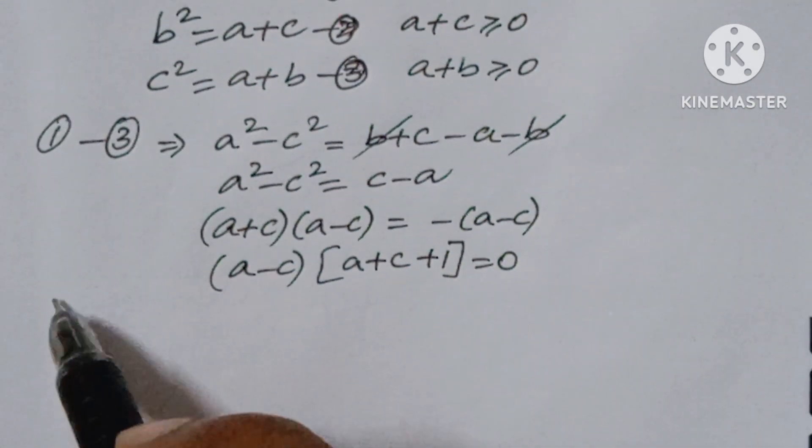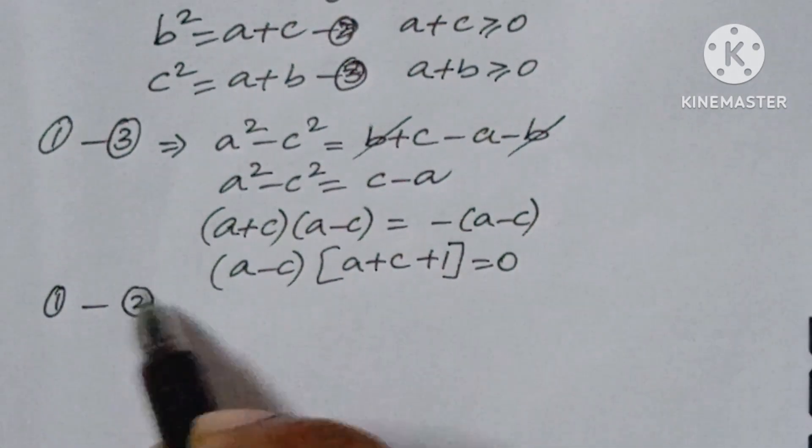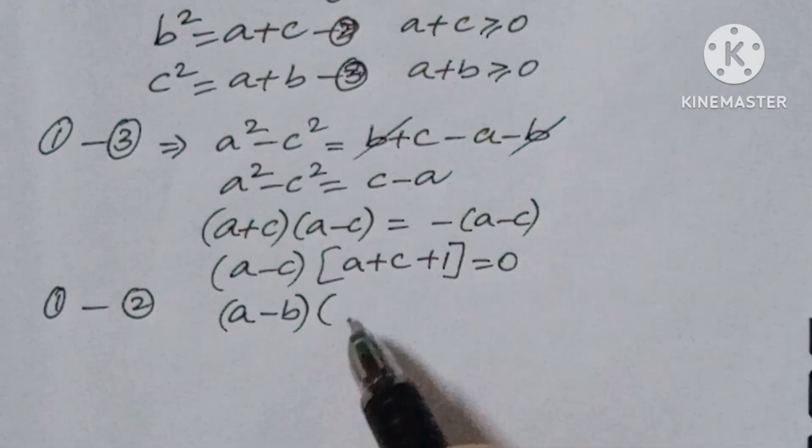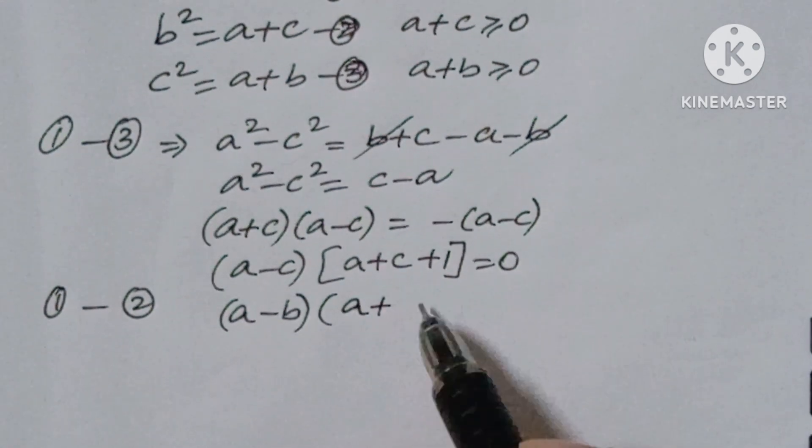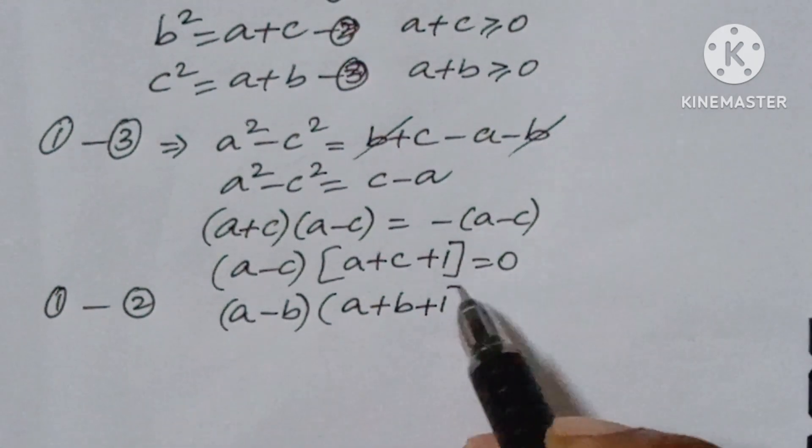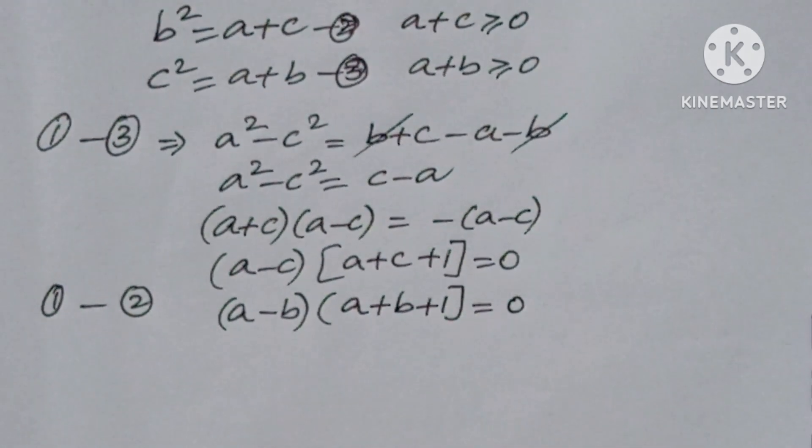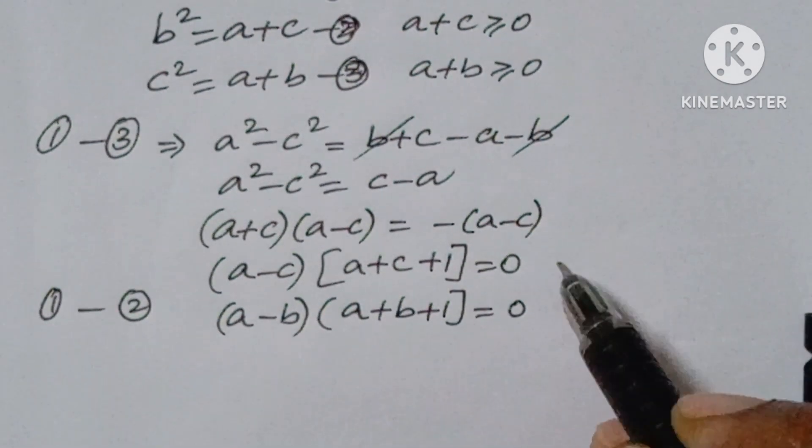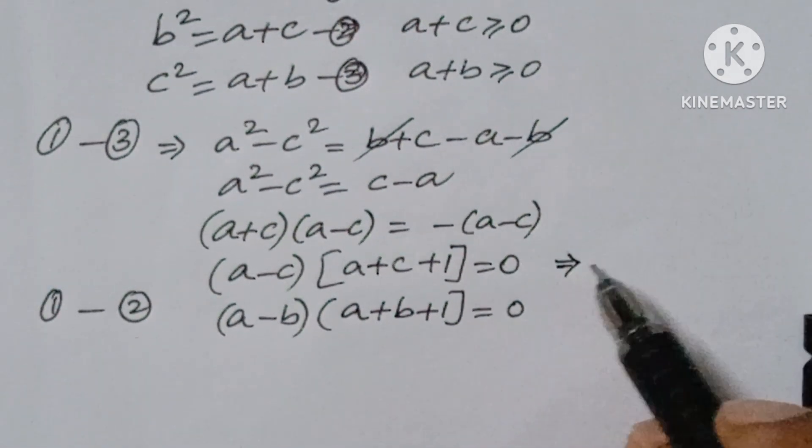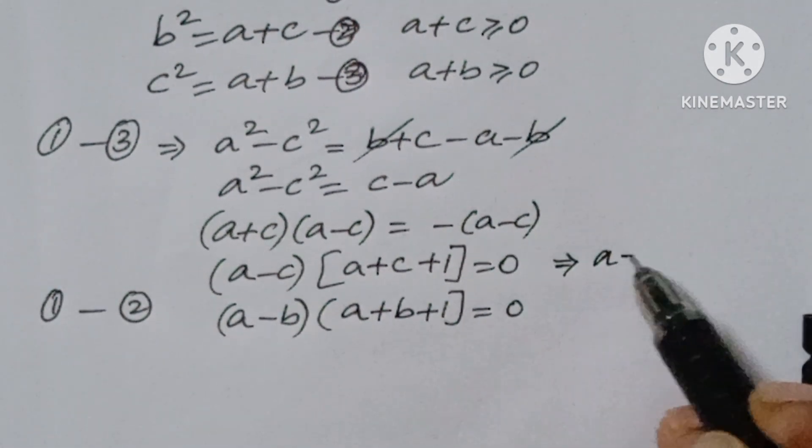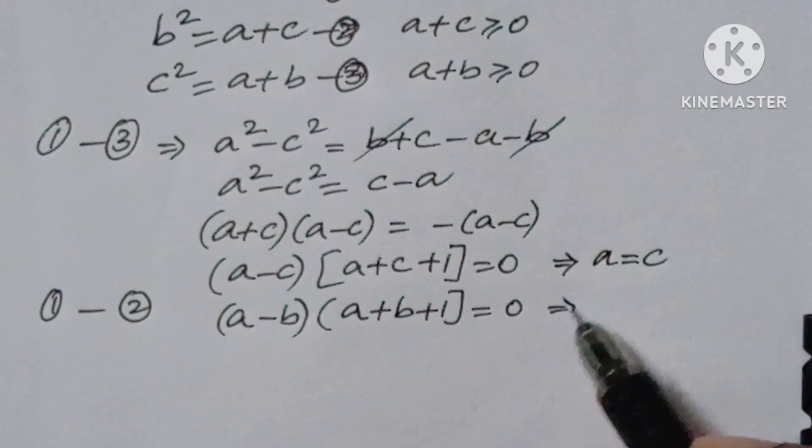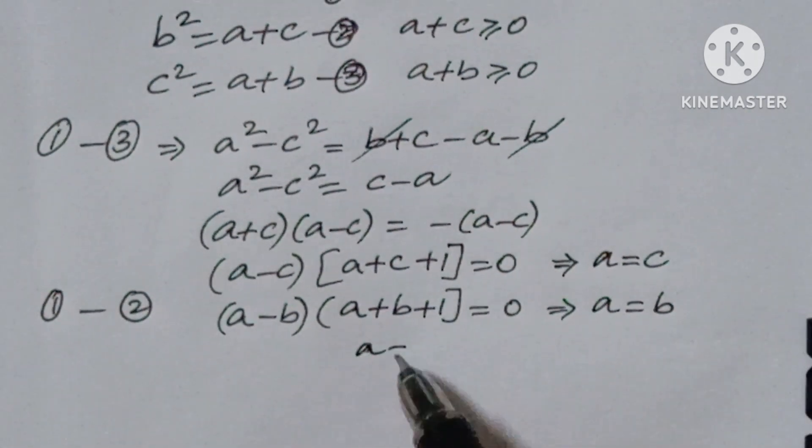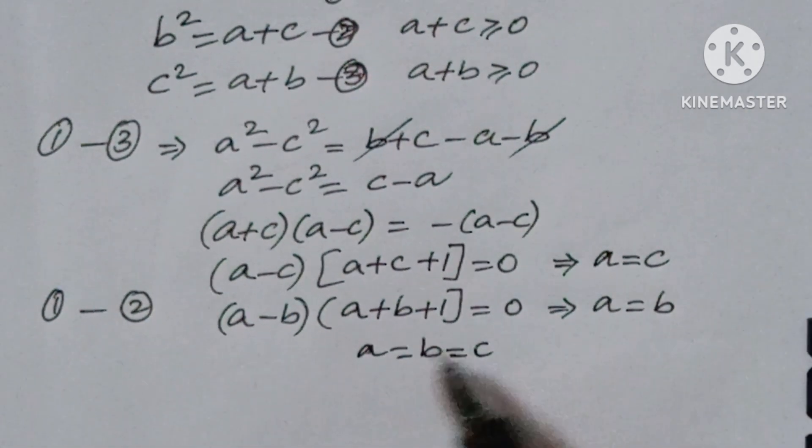Similarly, if you subtract 1 minus 2, here you will get (a-b)(a+b+1) is equal to 0. So now from this two you can write a equal to c, from here you can write a is equal to b. Now a is equal to b is equal to c.